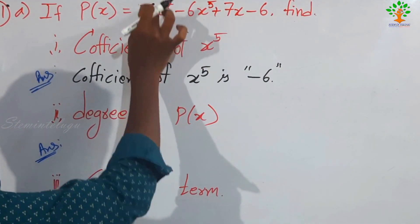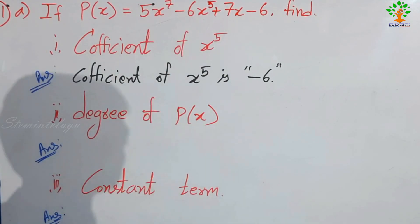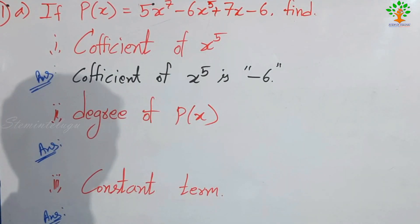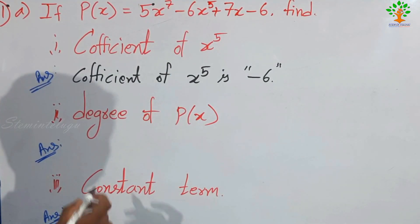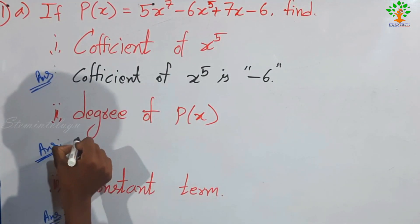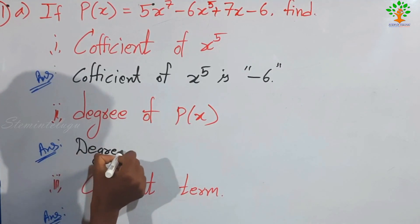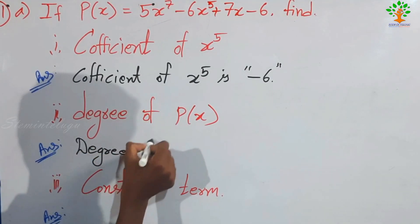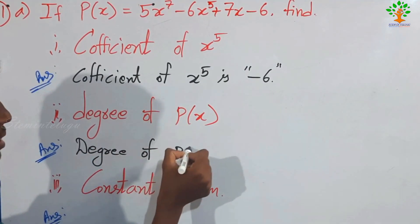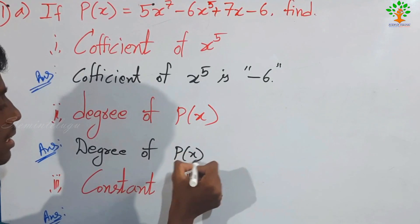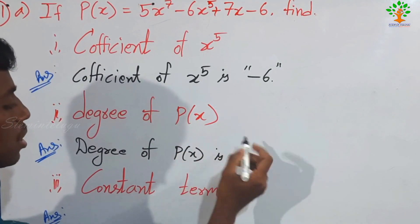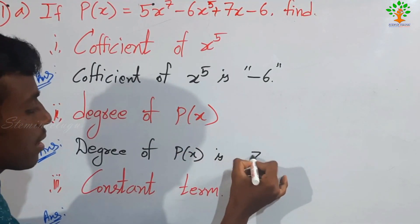So, the coefficient of x power 5 is minus 7. The degree of P of x is 7. The degree of P of x is 7.